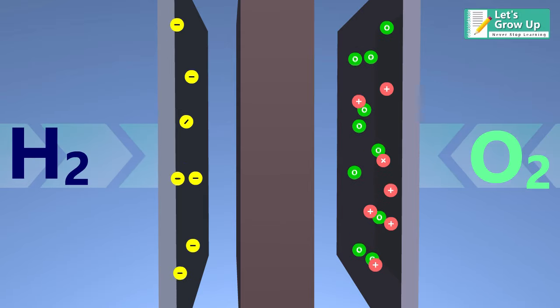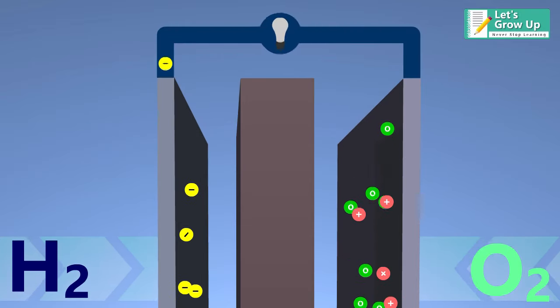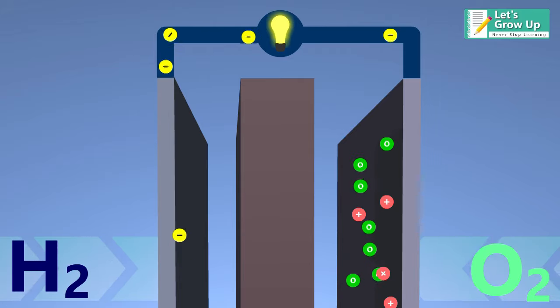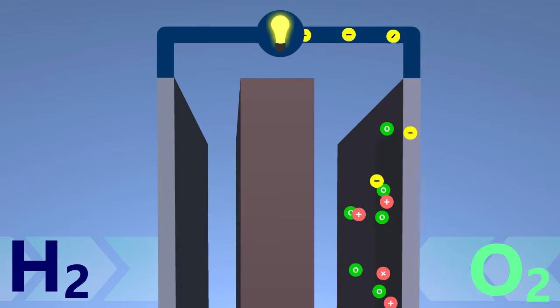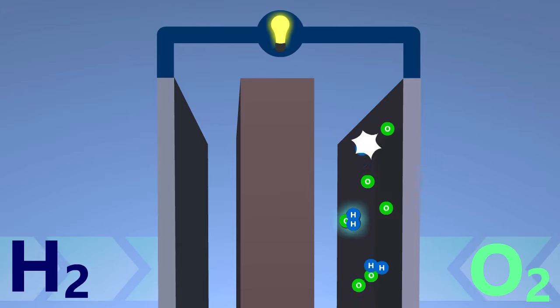At that point, the electrons are forced through a circuit and generate electric current and heat. The end product of this reaction is water (H2O). At the cathode, the hydrogen protons, electrons, and oxygen combine to produce water molecules.